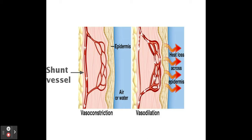Another term we need to get used to here is vasoconstriction and vasodilation. In vasodilation, more blood flows closer to the skin in the capillaries, resulting in more heat loss through radiation through the skin. This happens because the shunt vessel narrows, preventing blood from flowing away from the skin, forcing blood closer to the skin and therefore resulting in more heat loss. Whereas in vasoconstriction, less blood flows to the surface of the skin and more blood flows through the shunt vessel.